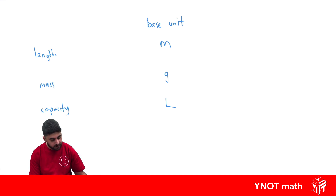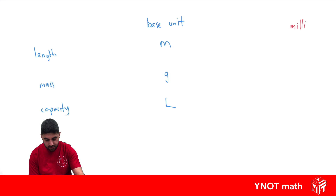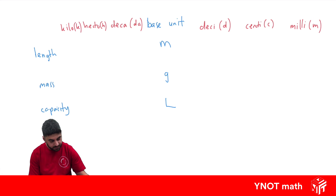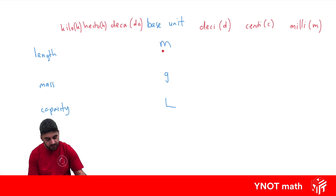Now we're going to look at something called prefixes. We're going to look at milli, which is a little m, centi which is a c, and deci which is a d. Then we're going to look at deca on the other side, which is actually da, hecto which is h, and kilo which is k. Inside our table we can use these prefixes at the start of our base units.